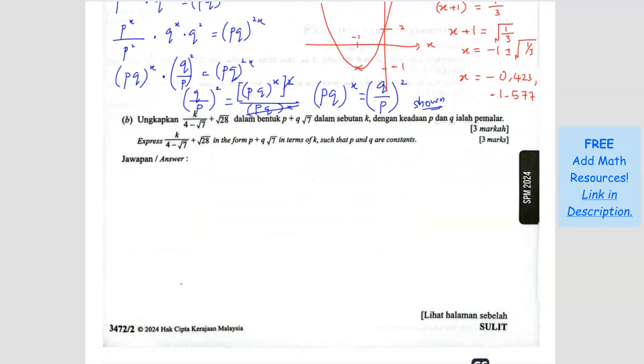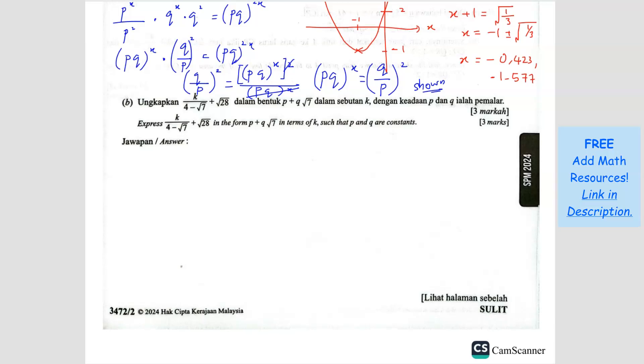Question b. Express, so this one is a surd question, in the form of - basically I just want you to rationalize the surd. So we get k over (4 - √7 + √28). So what we're going to do is we have to rationalize this, so we have to multiply the conjugate. The conjugate will be 4 plus √7.